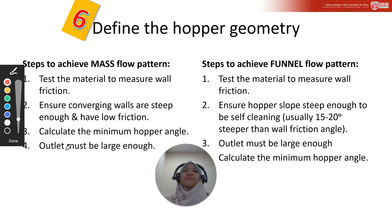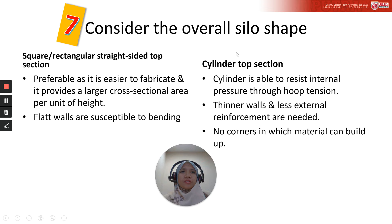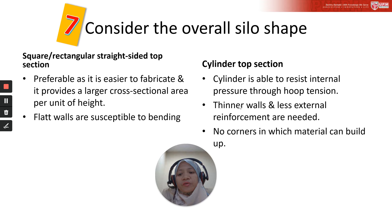Step 7 is to consider the overall silo geometry or silo shape. There are mainly two types: square or rectangular straight-sided top section, and cylindrical top section. You may think that a square or rectangular section is preferable to a circular cross-section because straight walls are easier to fabricate and provide a larger cross-sectional area per unit height.